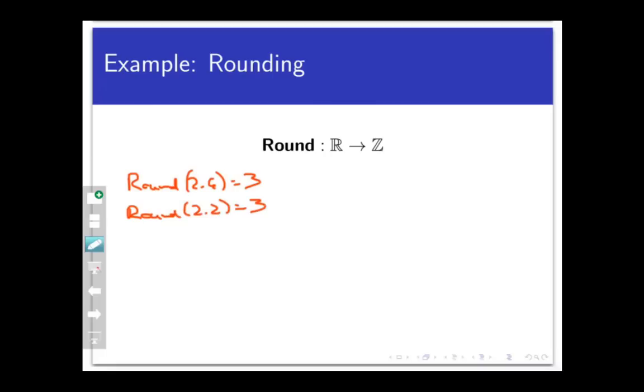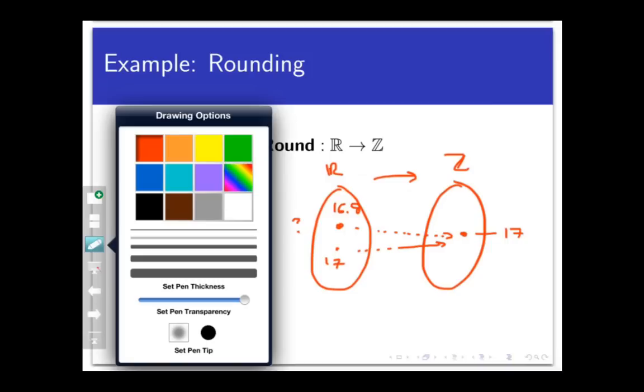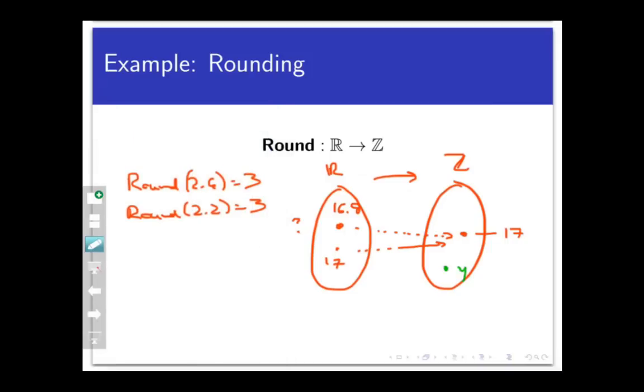But let's look at it from the codomain point of view. Namely, if I start with a point in the codomain, can I always find at least one point in the domain that maps to it? Let's see if that's the case by playing with some examples. Let's pick a random integer from the codomain, let's say 17. Is there a point in the real numbers that maps to 17? Well, sure. For example, 16.9 does, or 16.5, or just the number 17 itself. And this is not because 17 is anything special.